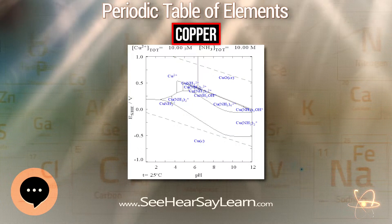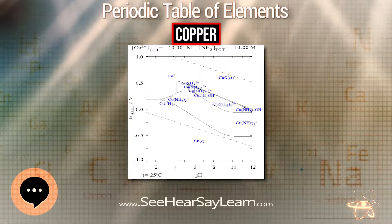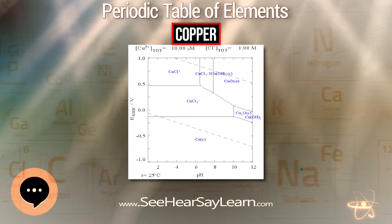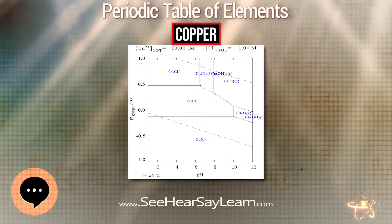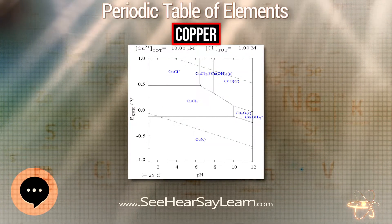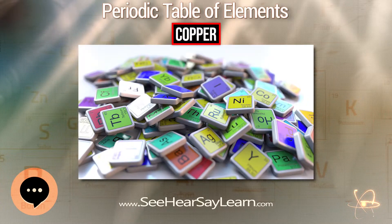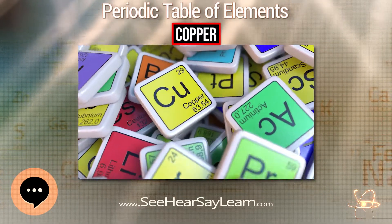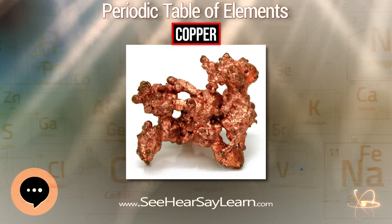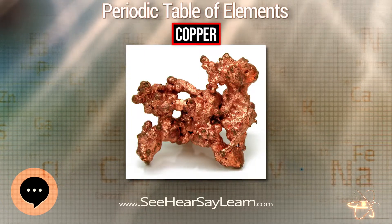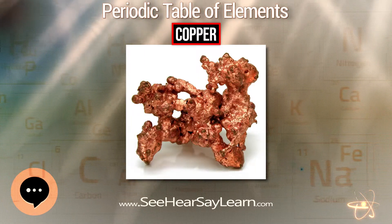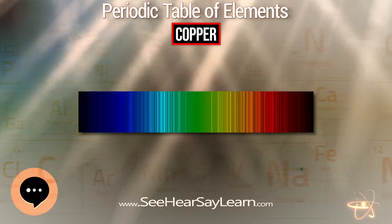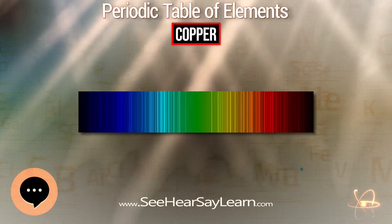Some 355 copper alloys were proven to kill more than 99.9 percent of disease-causing bacteria within just two hours when cleaned regularly. The United States Environmental Protection Agency has approved the registrations of these copper alloys as antimicrobial materials with public health benefits. That approval allows manufacturers to make legal claims to the public health benefits of products made of registered alloys.